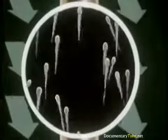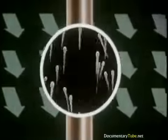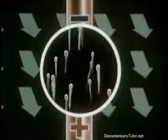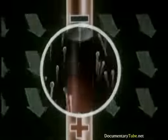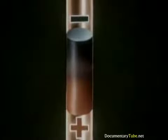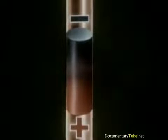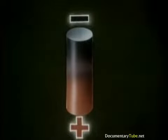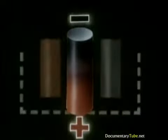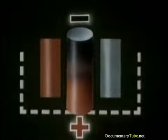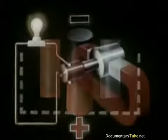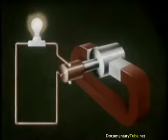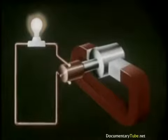This, in effect, establishes a negative and a positive charge at the ends of the conductor. We now have two charged terminals capable of producing a continuous flow of electric current, just as we had in the cell.